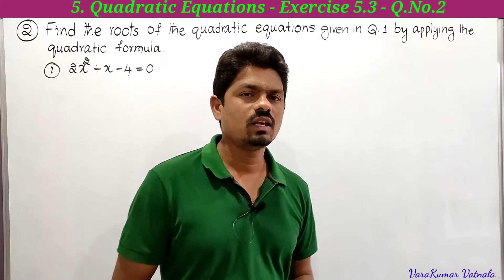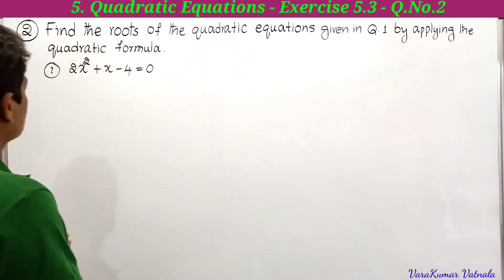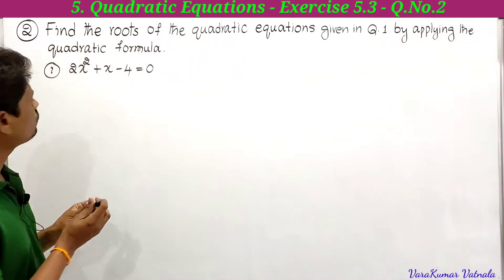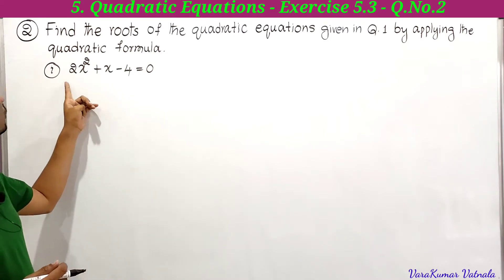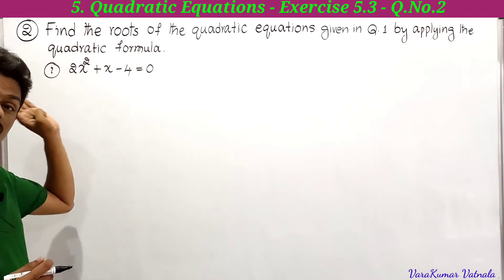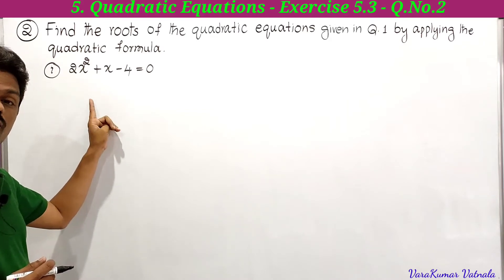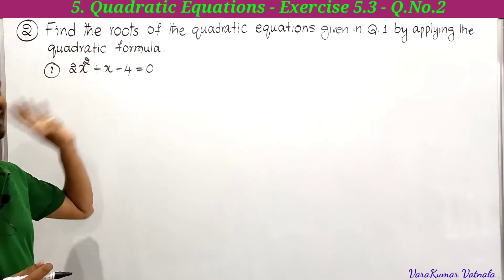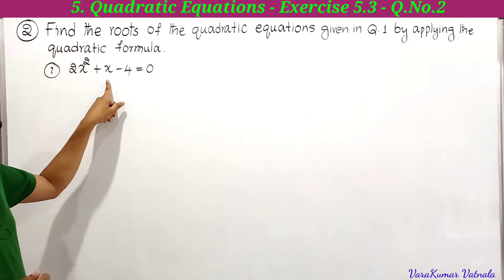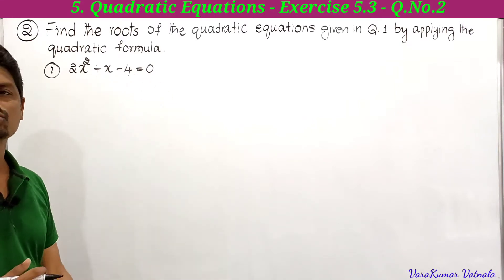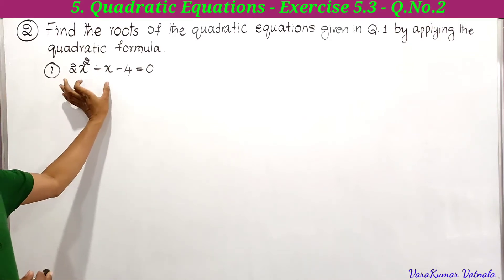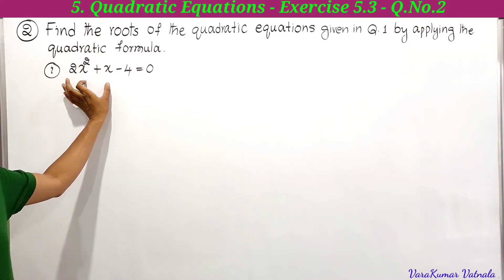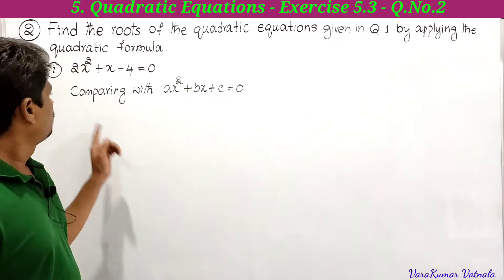There are four parts in question 1. For the first part, the equation is 2x² + x − 4 = 0. We have to compare this with the standard form ax² + bx + c = 0.